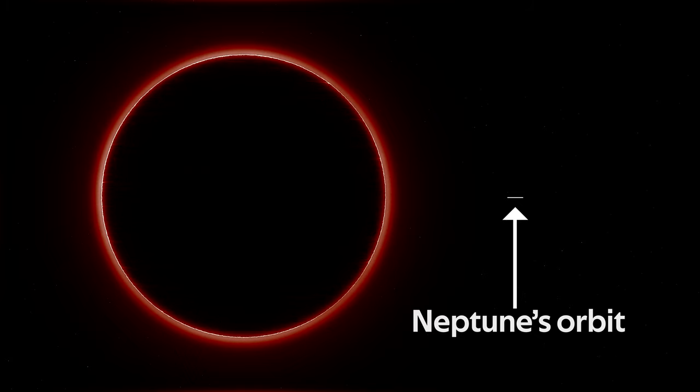The diameter of the black hole is 390 billion kilometers, which is 40 times the orbital distance of Neptune, the furthest planet in the solar system.